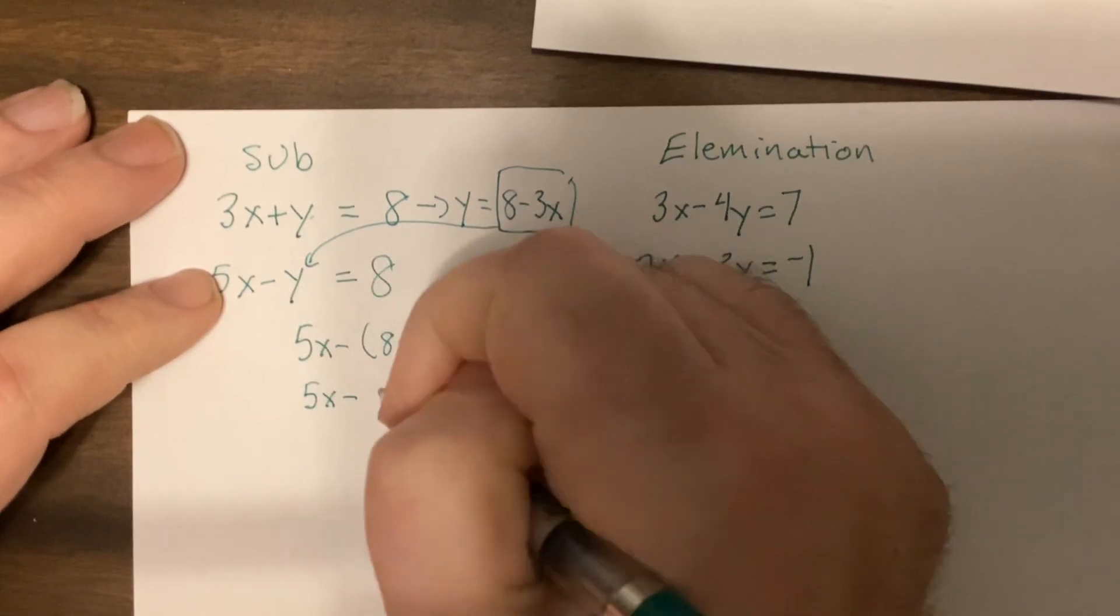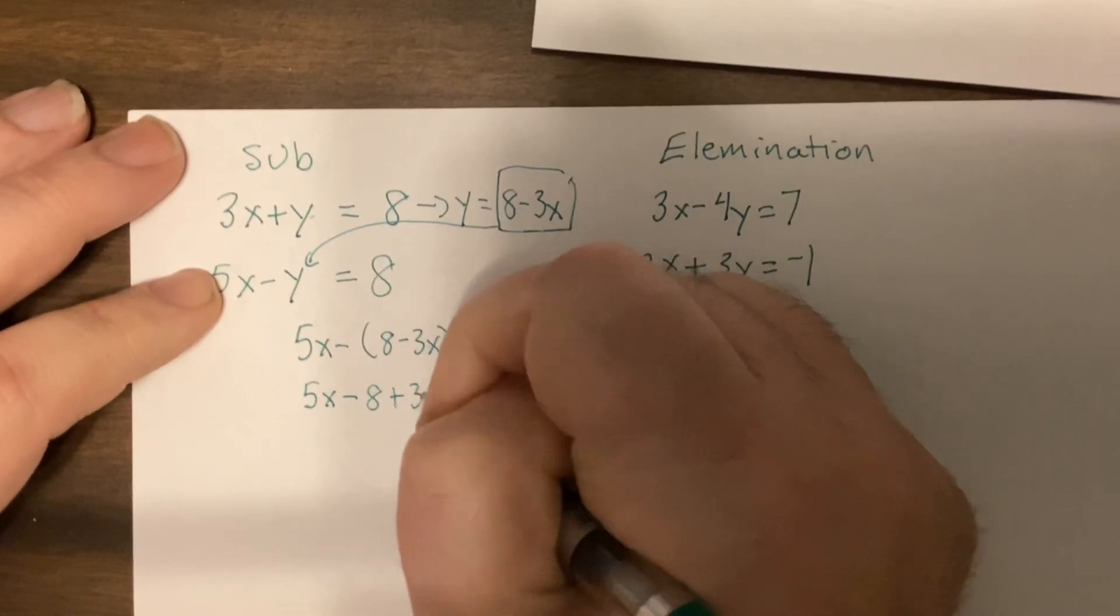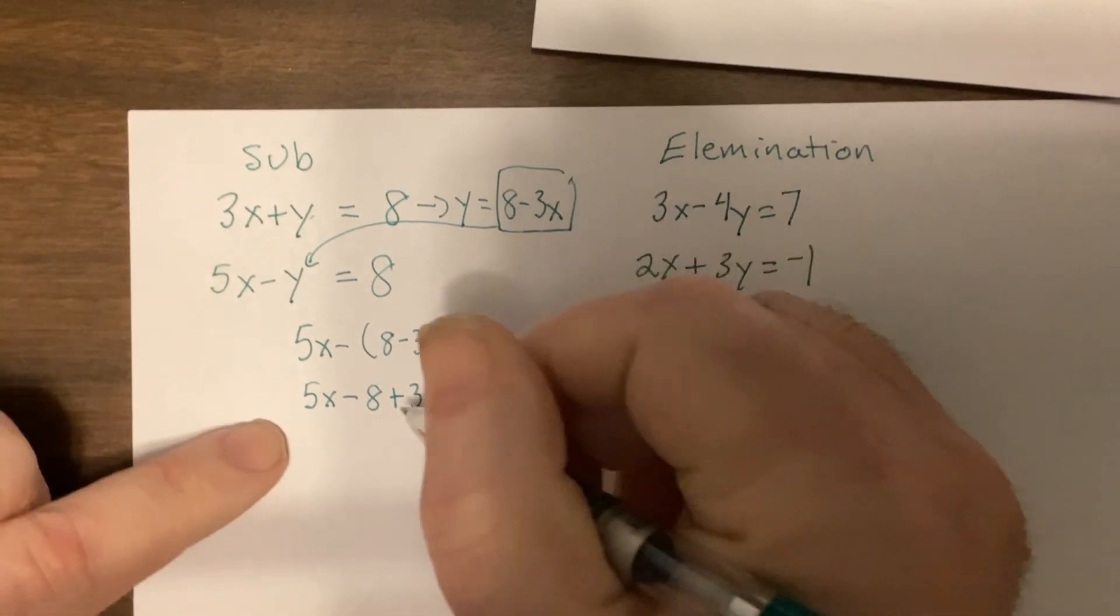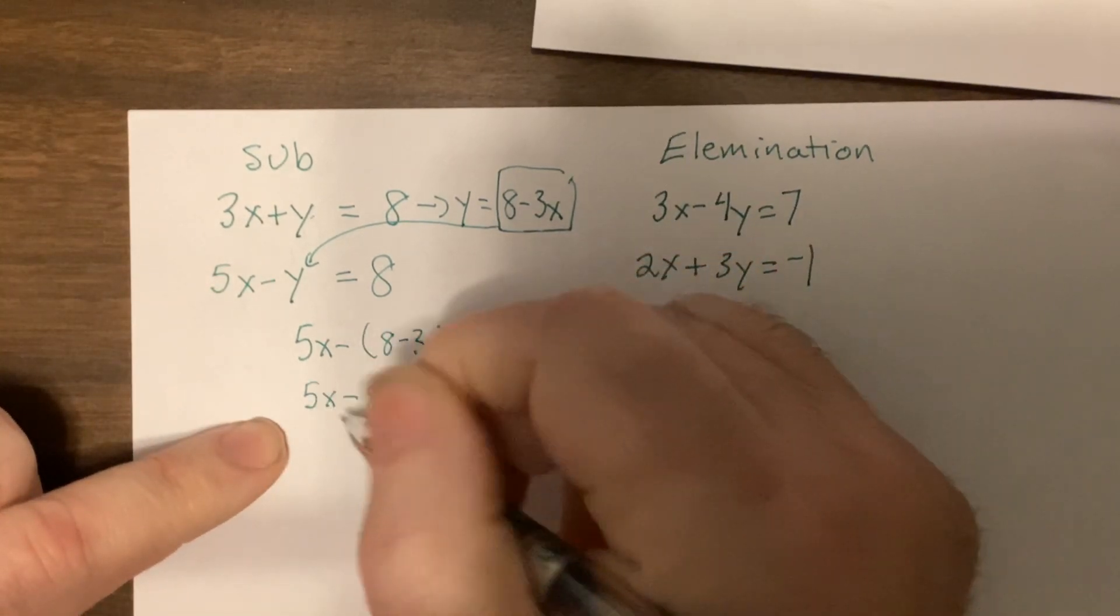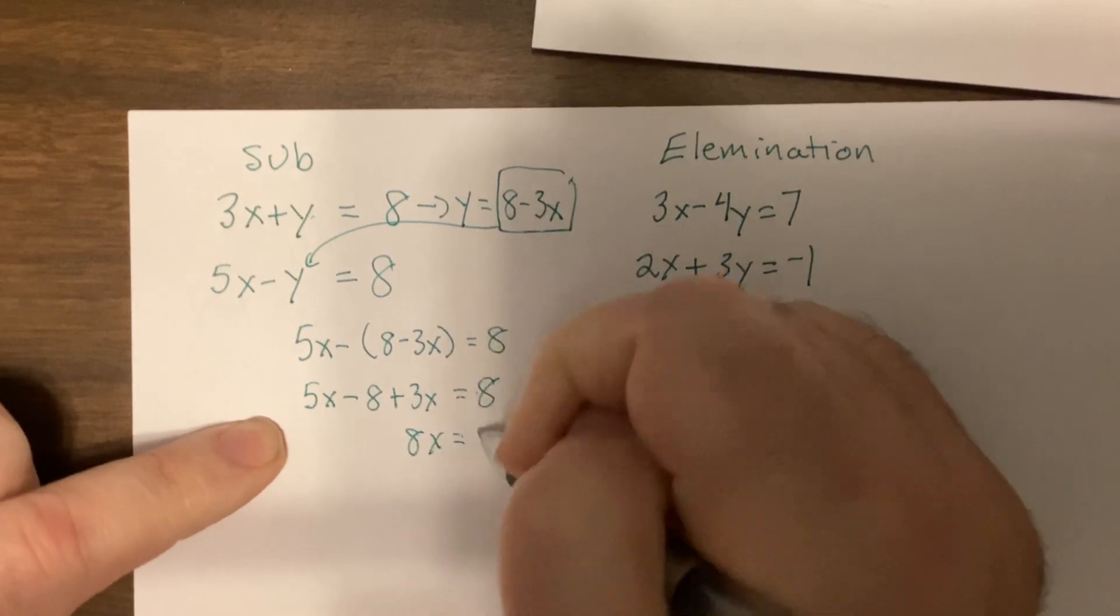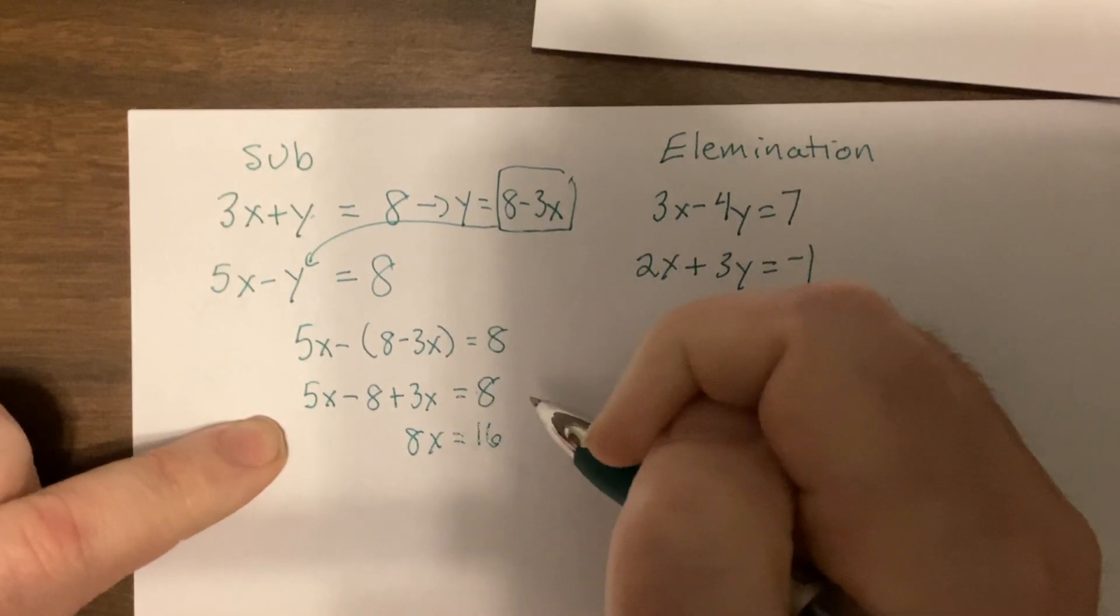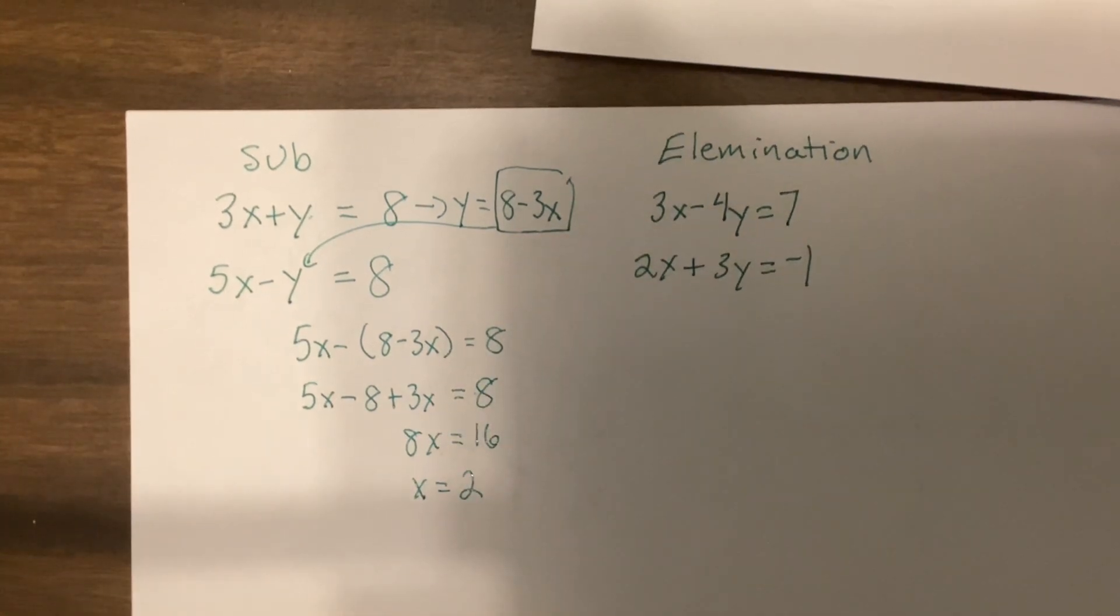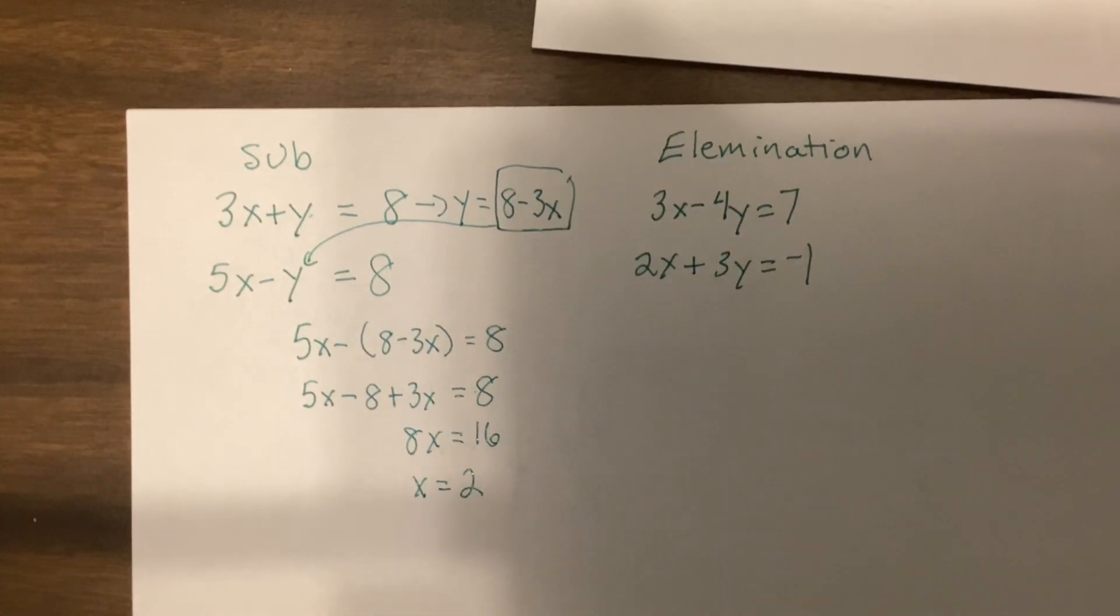So I'm going to add 8 to both sides and combine the x's. It'd be 8x equals 16, so x equals 2. Now on the final, here's the major mistake people make.